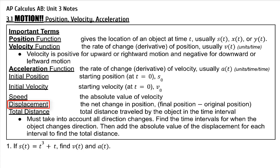The formula for displacement is final position minus original position. For total distance traveled by the object in the time interval, you must take into account all direction changes. Find the time intervals for when the object changes direction, then add the absolute value of the displacement for each interval to find the total distance.